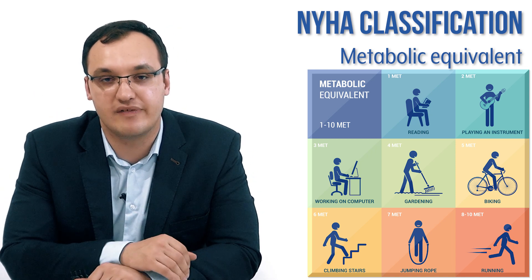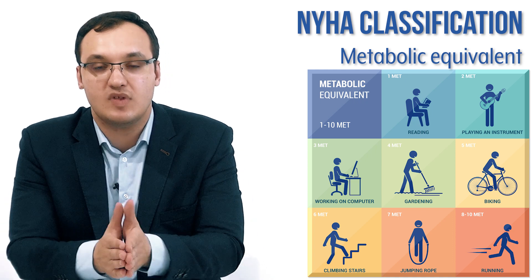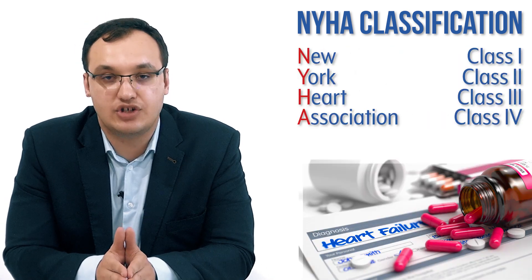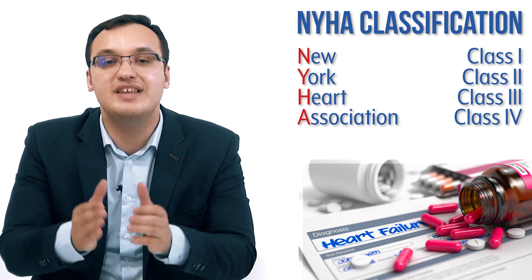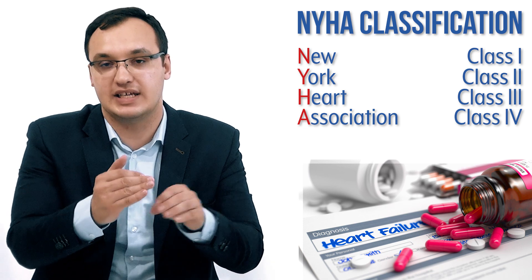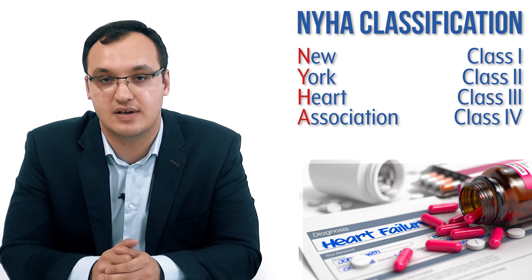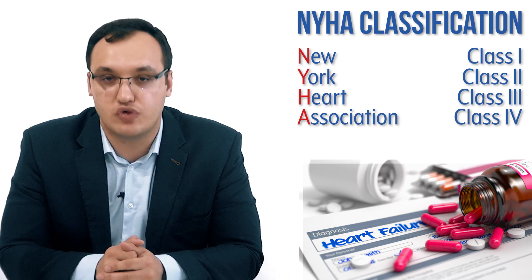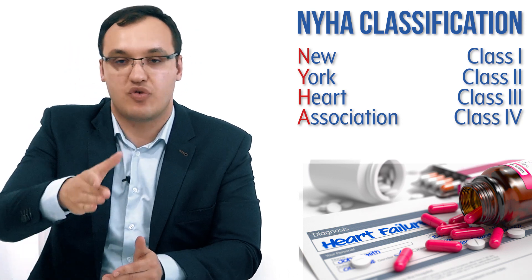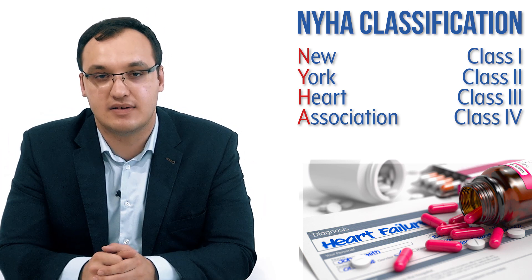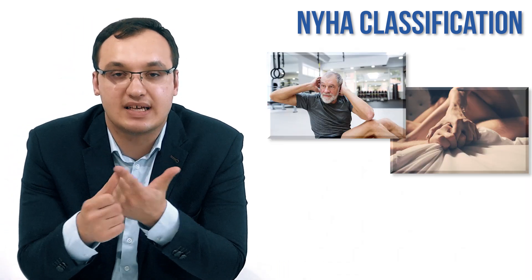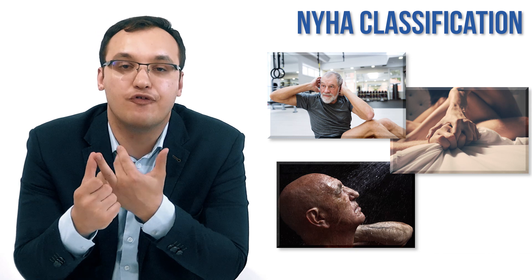To recap: the New York Heart Association classification has four classes. This is clinically important because treatment will differ depending on which class the patient is in — we won't treat an asymptomatic patient the same as one who has severe symptoms just lying in bed. Once again: Class 1 is sport, Class 2 is sex, Class 3 is shower, and Class 4 is lying in bed.